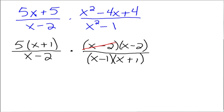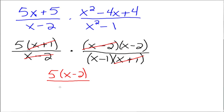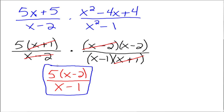Now we look for any common factors to the top and bottom. There's an x minus 2 and an x minus 2 — they divide out. There's an x plus 1 on top and an x plus 1 on the bottom — they leave a 1 behind. So we're left with 5 times x minus 2 on the top divided by x minus 1 on the bottom. You could multiply the 5 through the top if you'd like, but there's really no reason to. That's it for multiplication: factor everything, divide out the common factors.